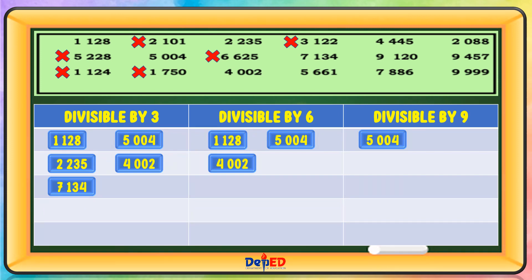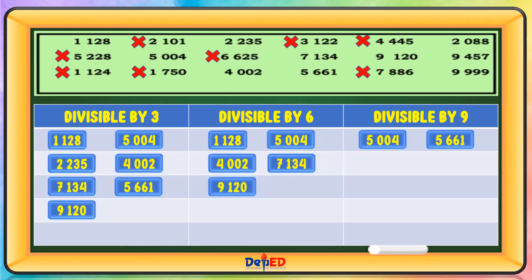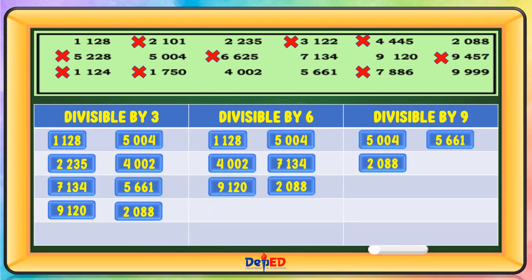6,175 is divisible by 6. 7,134 is divisible by 3 and also by 6. 5,661 is divisible by 3 and by 9. 4,445 is not divisible by 3, 6, or 9. 9,120 is divisible by 3 and also by 6. 7,886 is not divisible by 3, 6, or 9. 2,088 is divisible by 3, 6, and 9. 9,457 is not divisible by 3, 6, or 9. 9,999 is divisible by 3 and by 9.